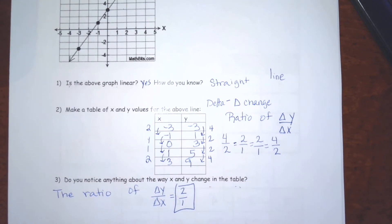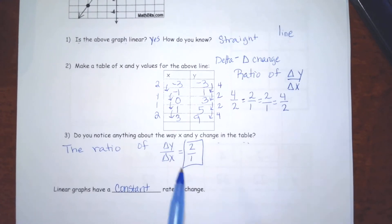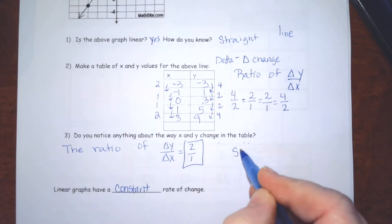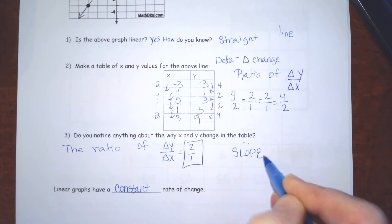This rate of change is very important. And it needs to be constant. And we're also going to call this the rate of change. It's also going to be called the slope.